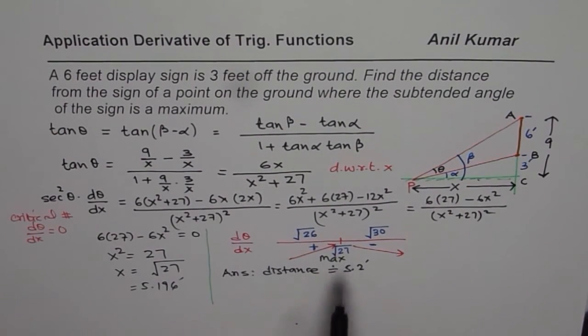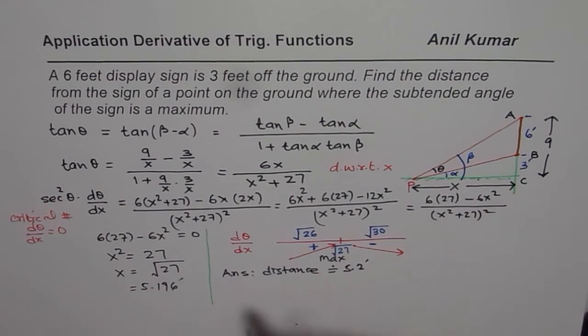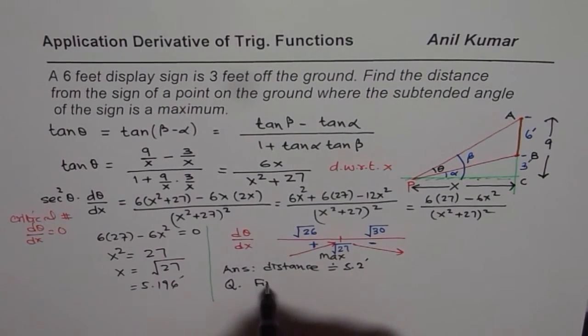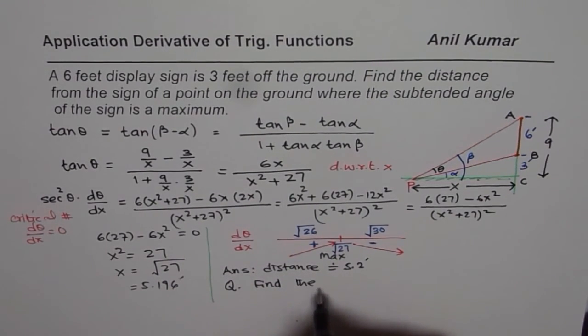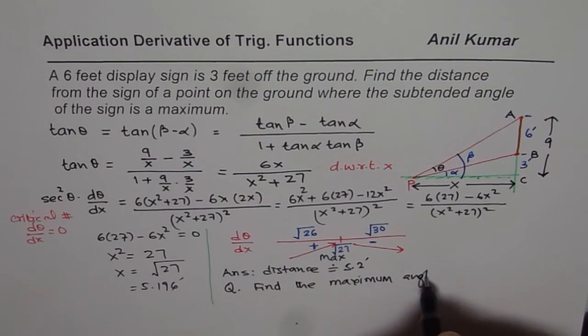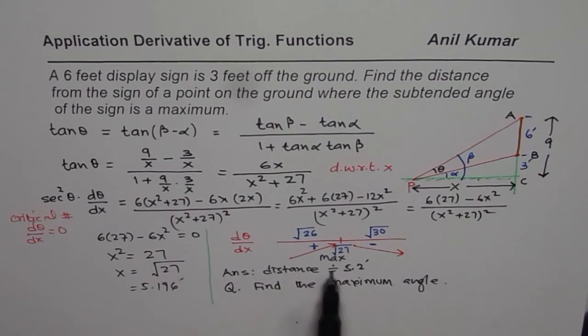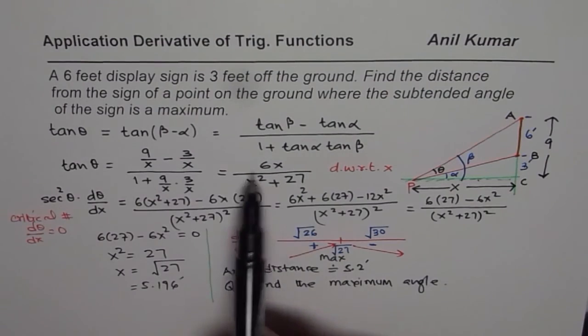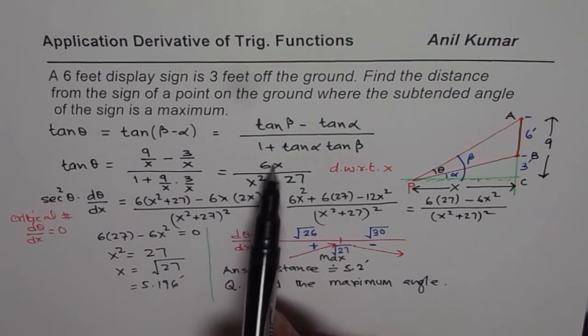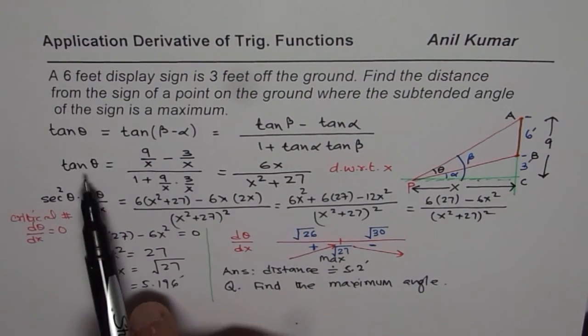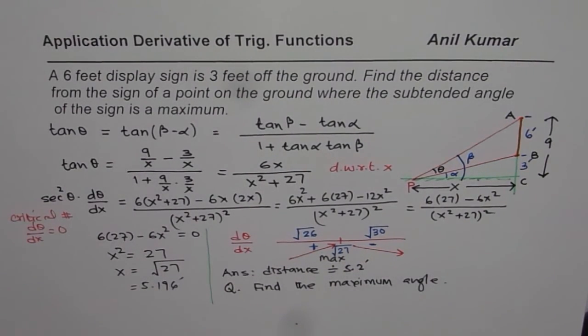At times, you may be asked for the angle, right? So at times, you may be asked for the angle. So the question for you is, find the maximum angle. Now to find the maximum angle, you need to substitute this value of square root of 27 in this formula. Tan theta equals to 6x over x square plus 27. And then tan inverse will give you the angle theta, right? So that is how you can actually find the maximum angle also.